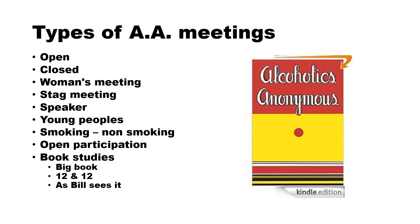Originally, there were no AA meetings. The book Alcoholics Anonymous was purchased in a bookstore or by mail order, and people read it and, following the simple principles in it, got sober. As more people got sober, meetings sprung up — originally more like a book club that read the book, discussed it, and tried to help each other. There are many different types of AA meetings with different personalities. Even within a town, you may have meetings in richer and poorer parts of town. Each meeting has its own personality.